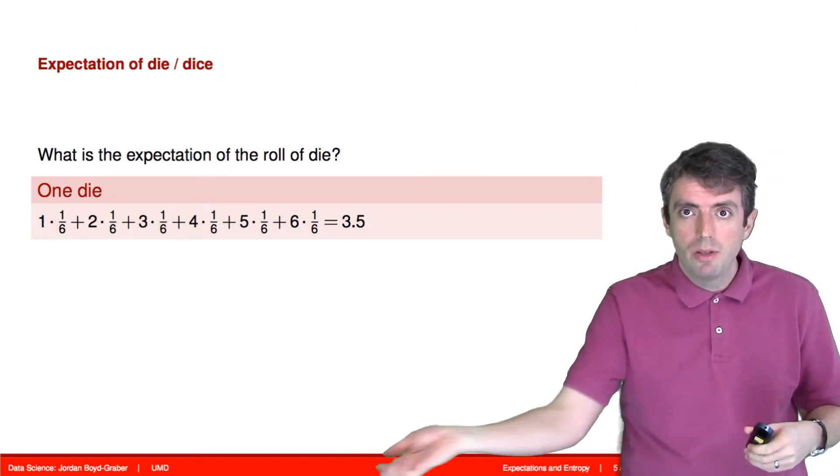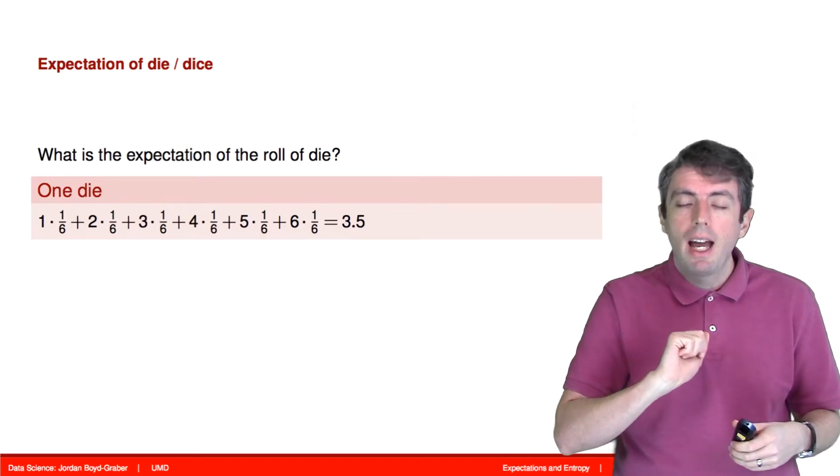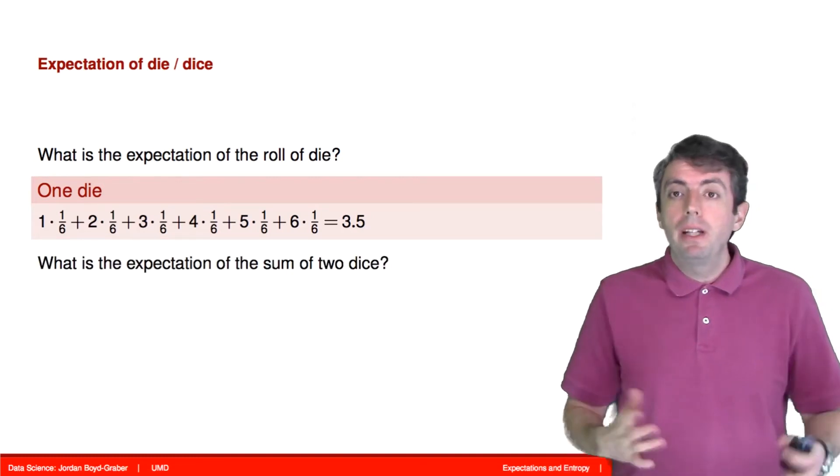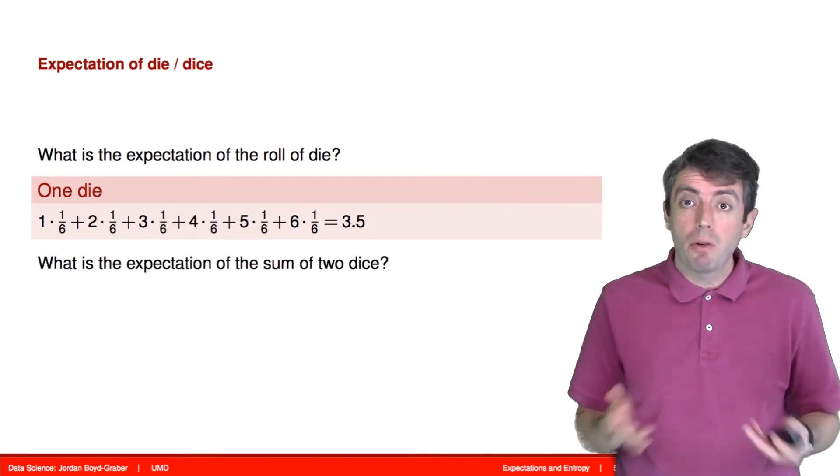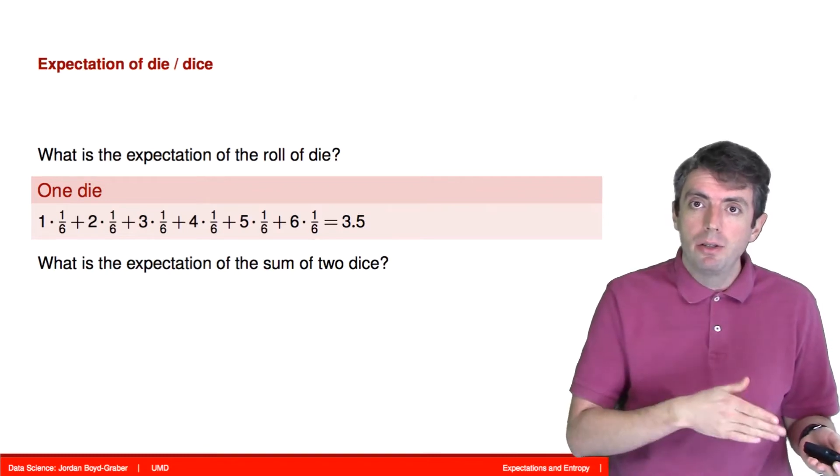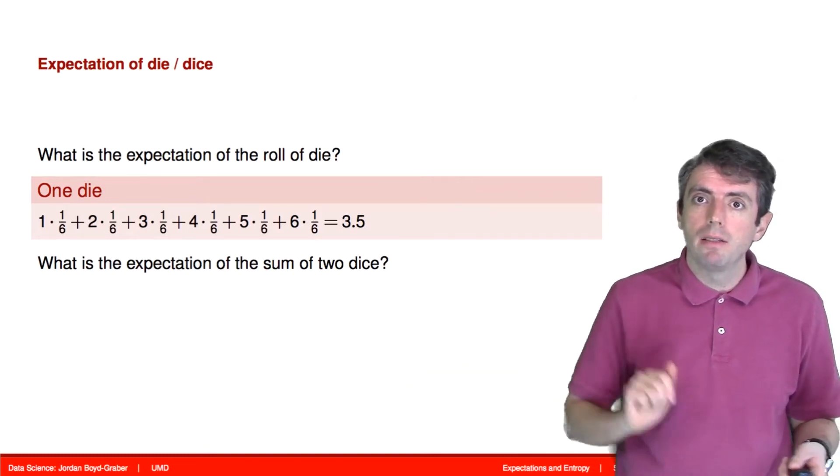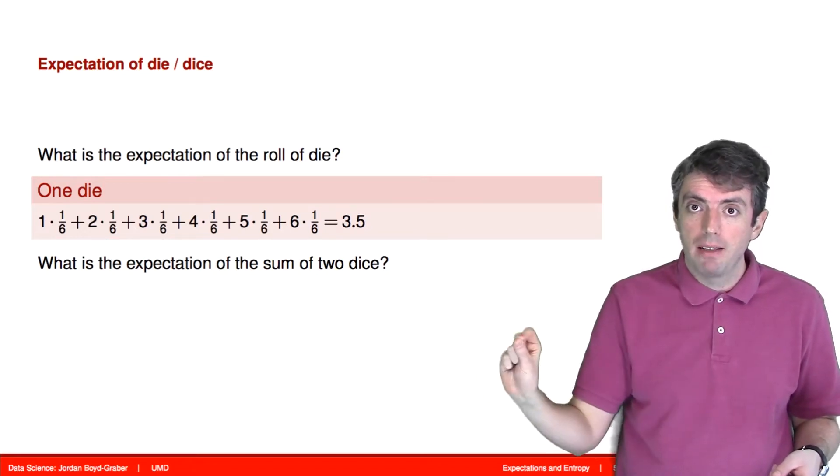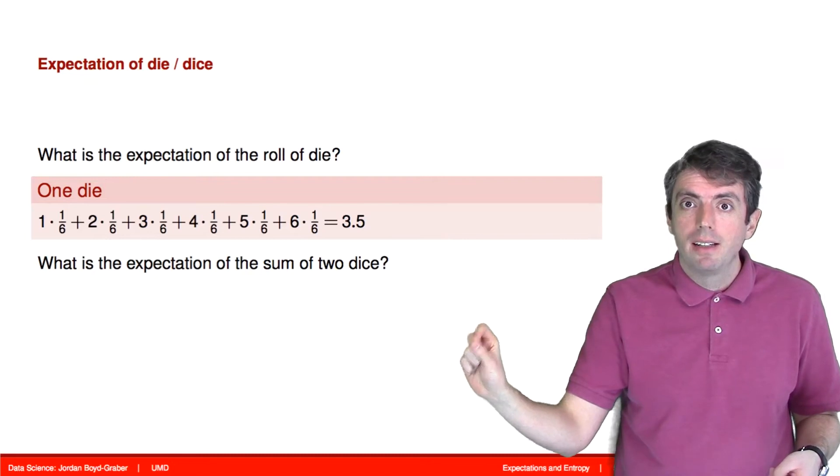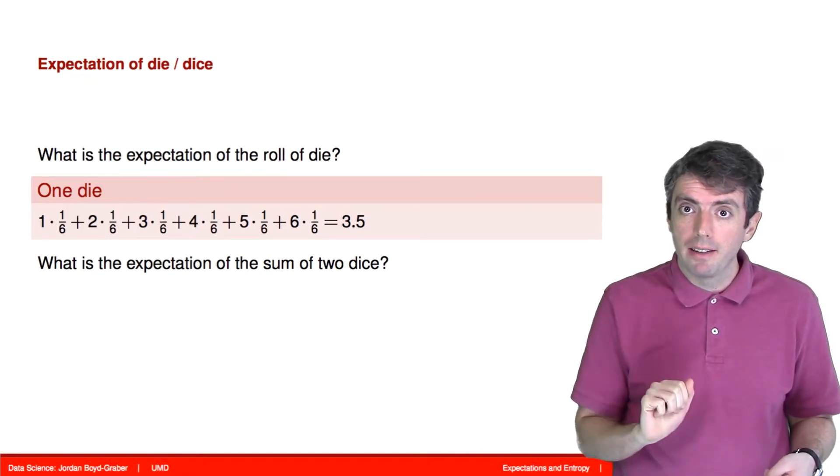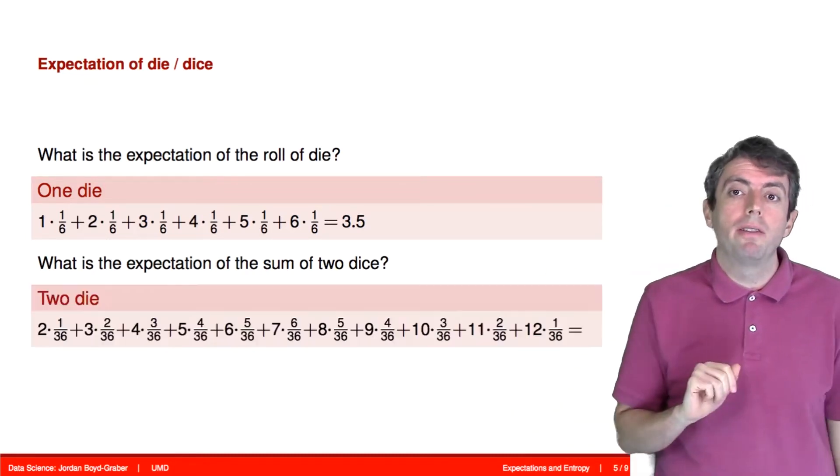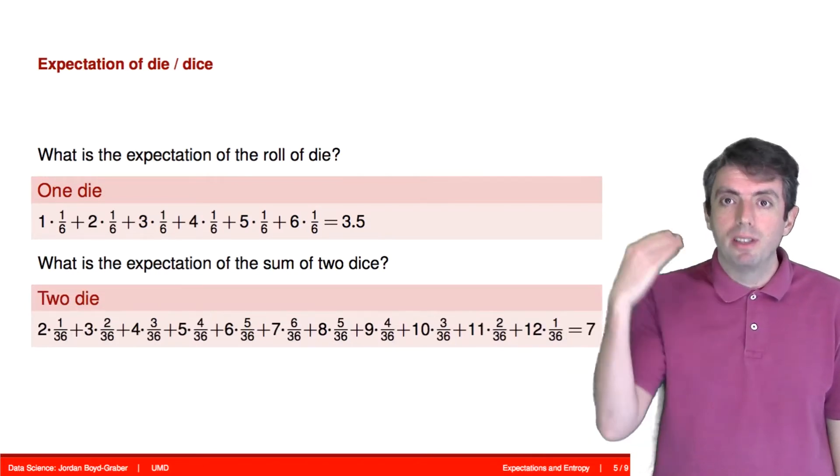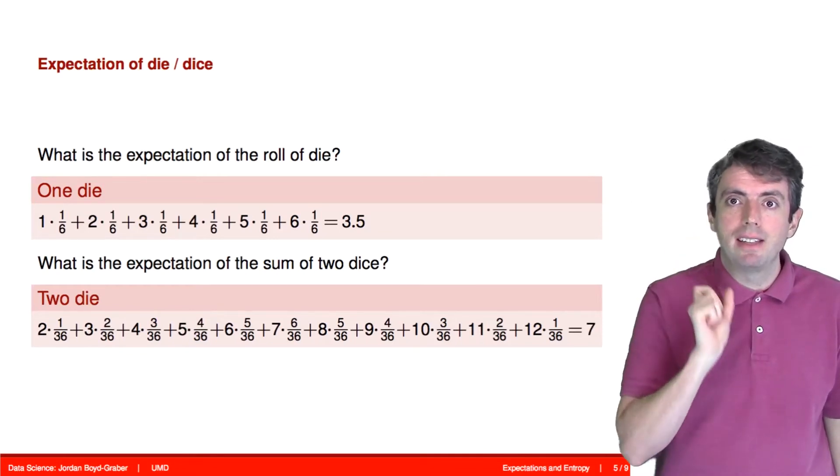We can do exactly the same thing with a more complicated distribution. Let's say that we roll two dice and we take the sum. What is the expected value of that sum? Here we have a much more complicated outcome space. There are 11 different outcomes, 2, 3, 4, up to 12, and we're now going to have a more complicated probability distribution as well. Some outcomes are more likely than others. But we get a very intuitive answer. As we compute this expectation, we get seven, which is double the expectation of a single die.